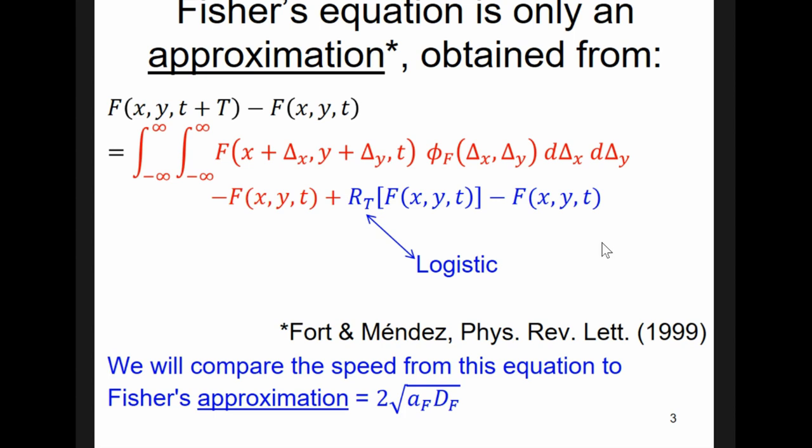And this change in the population density is again due to two processes. The process in red, which we now call dispersal, and the process in blue, which is net reproduction, and it is also driven by logistic. So, the difference between this model and Fisher's model is in the red term. This dispersal term is very simple to understand, because these integrals are only sums.